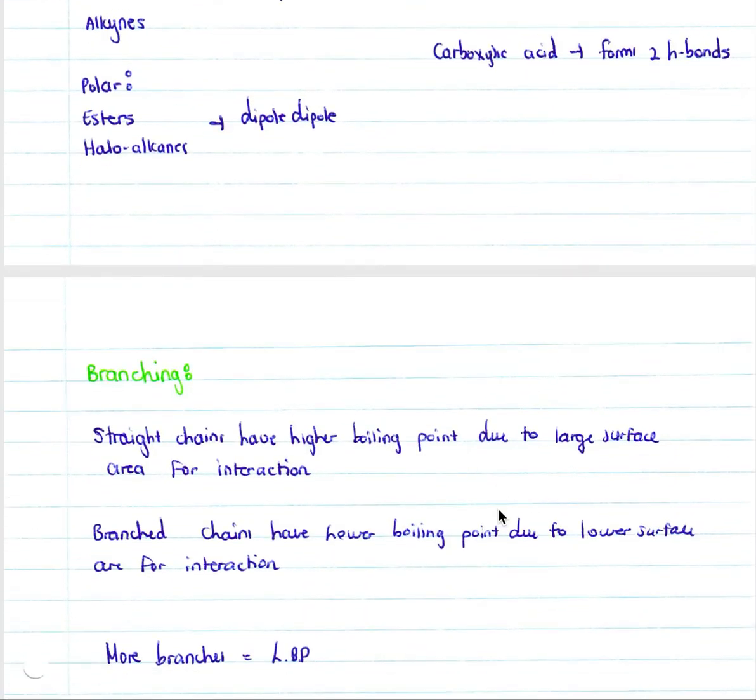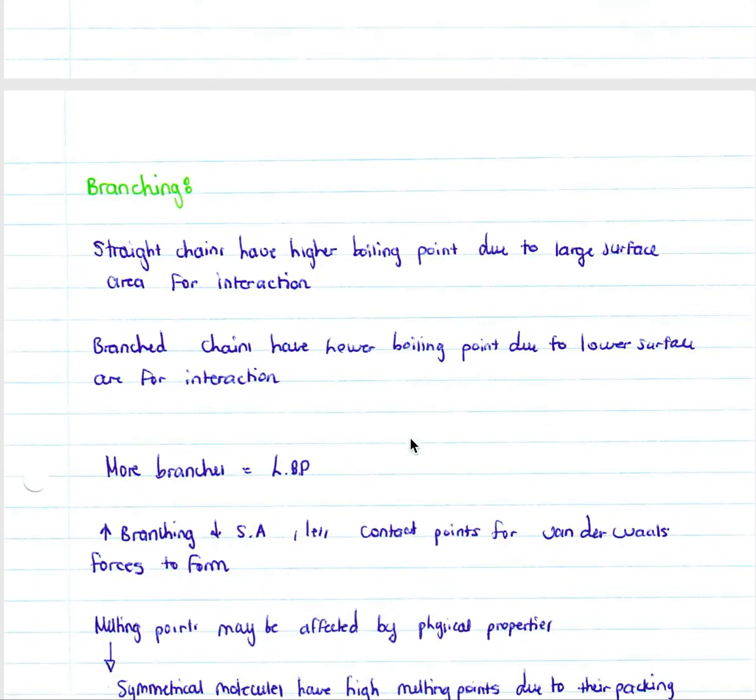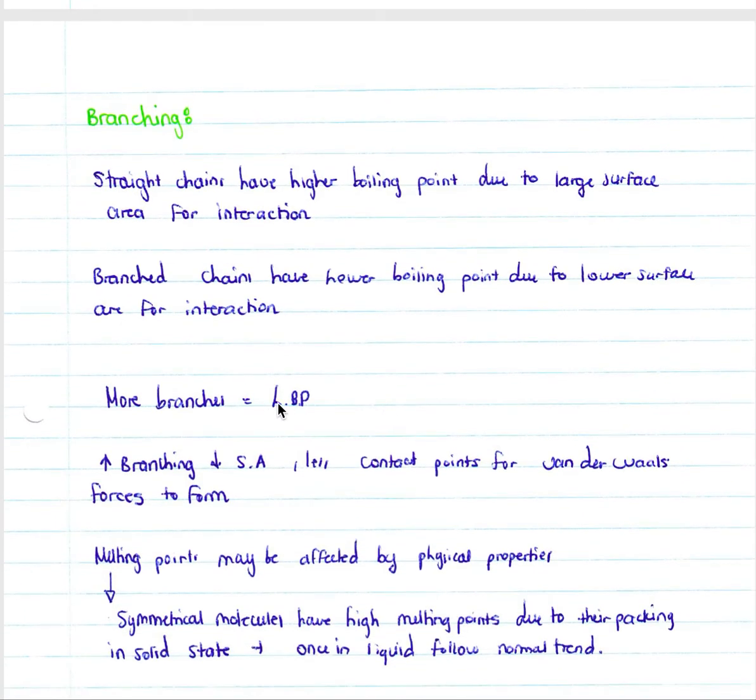Here we look at branching. When we look at branching, straight chains have a higher boiling point due to larger surface area for interaction, and branched chains have a lower boiling point due to lower surface area for interactions. Simply, more branches equals a lower boiling point. As we increase our branching, our surface area of our molecule decreases. Therefore there are less contact points for van der Waals forces to form.